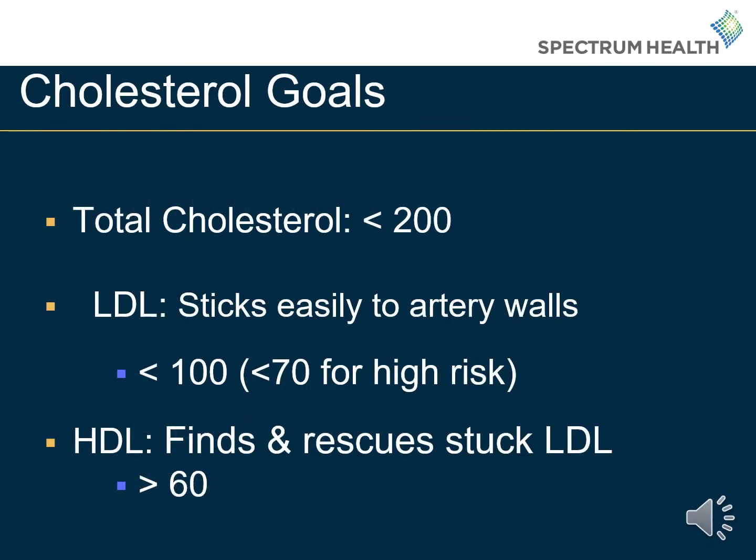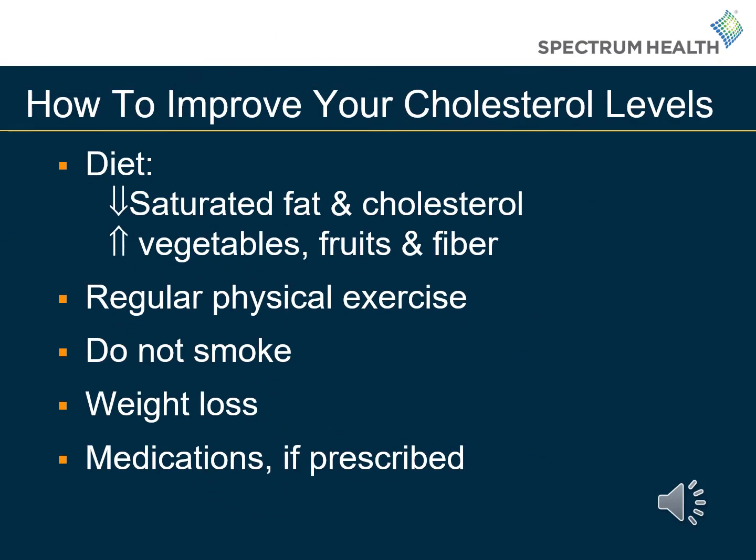According to the American Heart Association, to reduce our risk for heart disease, we want to aim for a total cholesterol of under 200 milligrams per deciliter. LDL is known as our bad cholesterol, as it sticks easily to the artery walls — we want to aim for under 100, and even lower if you have multiple risk factors. HDL is known as our good cholesterol. HDL finds and rescues the stuck LDL and cleans it out of our arteries to process it as waste. For HDL, we want to aim for greater than 60. To improve cholesterol, eat more fruits and vegetables and less saturated fat and cholesterol. Cholesterol only comes from animal products, so by reducing our consumption of animal products, we will greatly reduce our cholesterol levels. Regular exercise and weight loss can also improve cholesterol, as well as medications if prescribed. Lastly, do not smoke, as smoking has shown to increase our risk for heart disease in a multitude of ways.